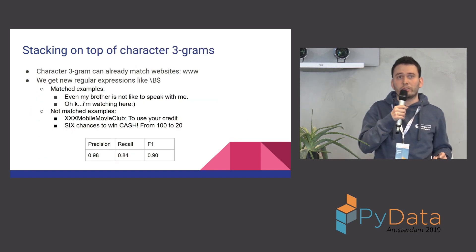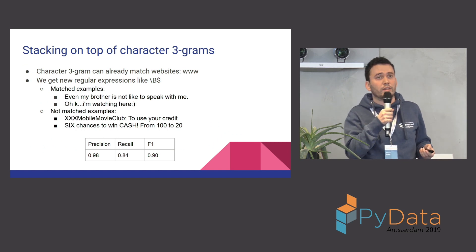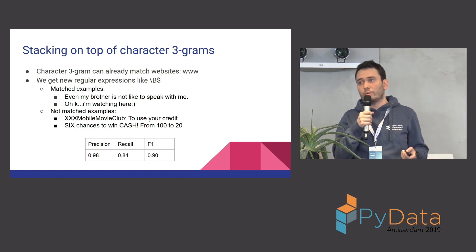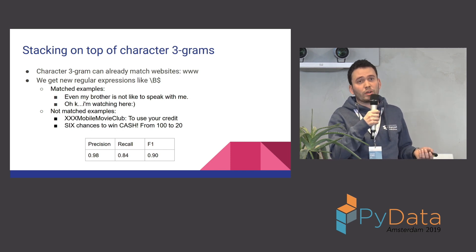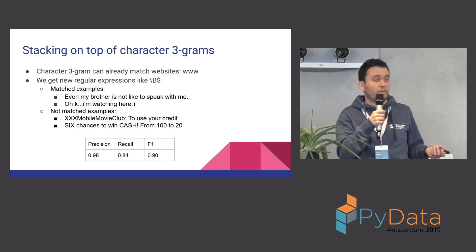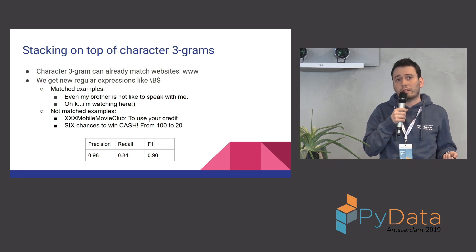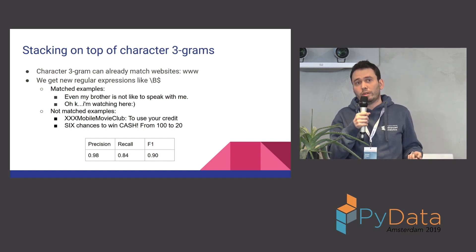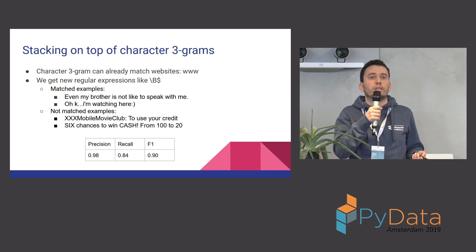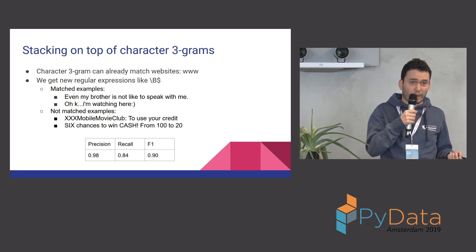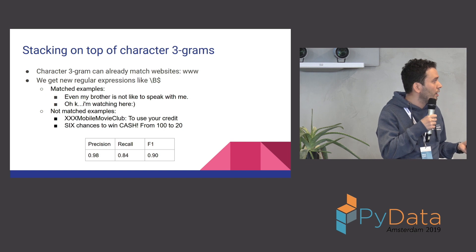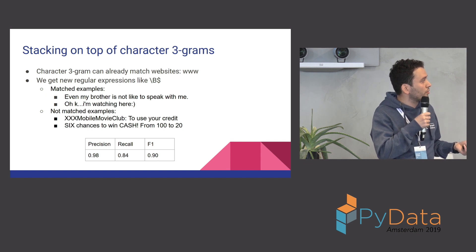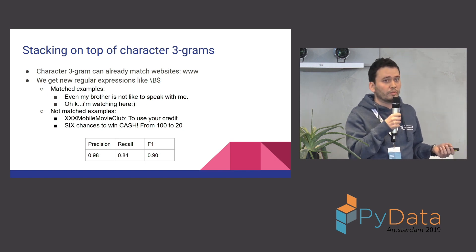Here are the results. We did this on top of character trigrams. For example, previously we were catching websites with regular expressions, but now we don't need to because we have character n-grams — so 'www' is already cached. We then get some new regular expressions which are really difficult to get with other traditional methods.